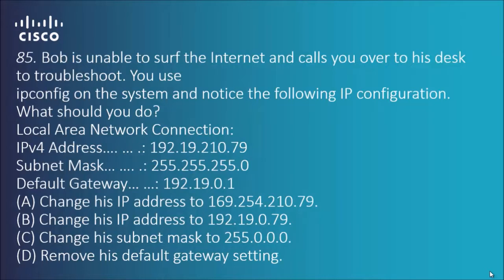Next one — Bob is unable to surf the internet and calls you over to his desk to troubleshoot. We use ipconfig on the system and notice the following IP configuration. What should you do? Again we've got a similar prompt: IPv4 address, subnet mask, and default gateway.